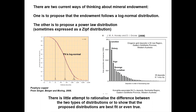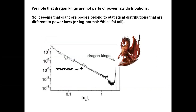There are two current ways of thinking about mineral endowment. One is to propose that endowment follows a log-normal distribution, as shown in the orange figure, and the other is to propose a power law distribution, sometimes expressed as a Zipf distribution. There is little attempt to rationalize the difference between these two types of distributions in the literature, or even to show that the proposed distributions are the best fit or even true. To emphasize: dragon kings are not parts of power law distributions, so giant ore deposits appear to belong to statistical distributions different from power laws or log-normal distributions, which have thin fat tails.